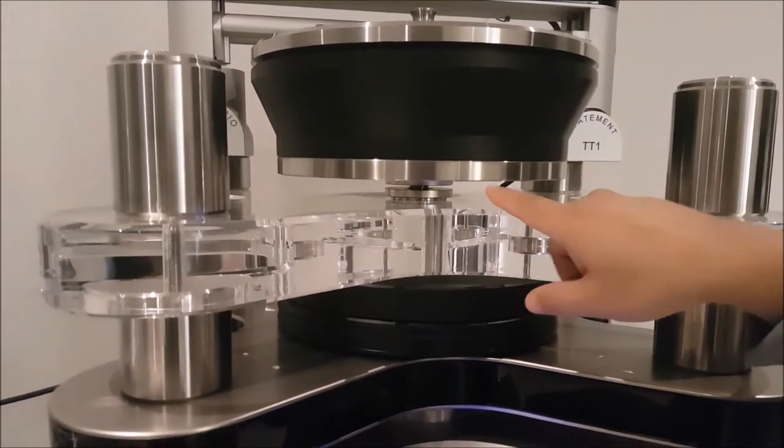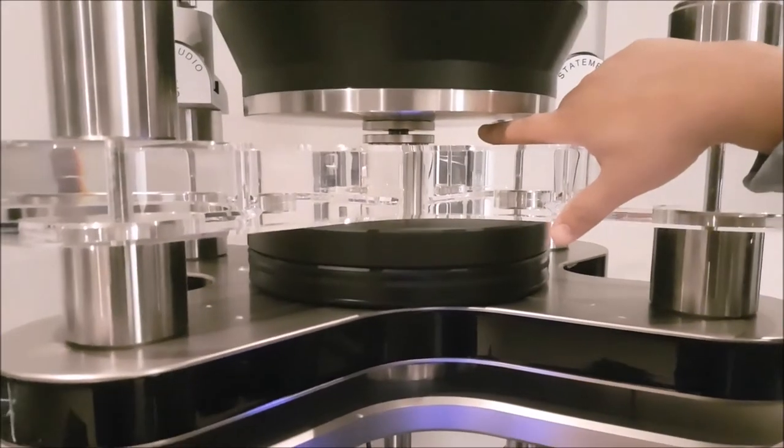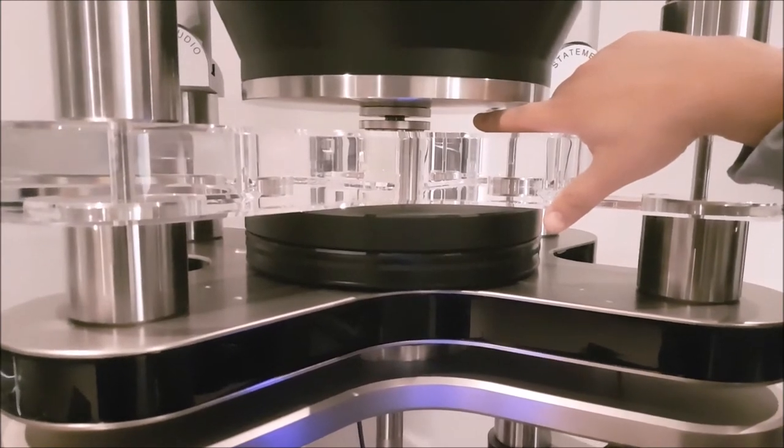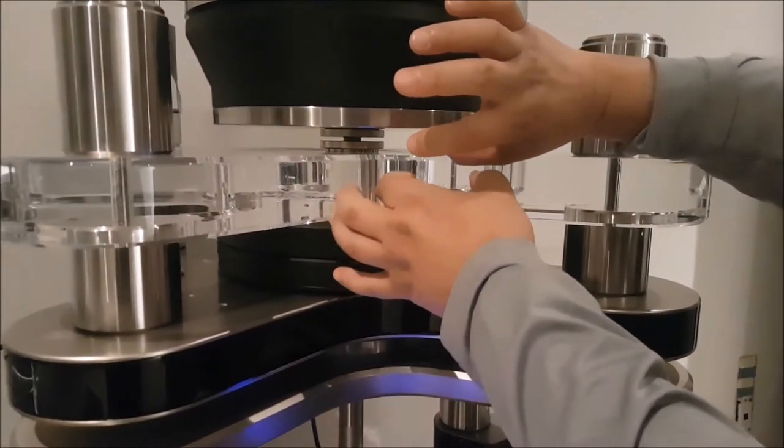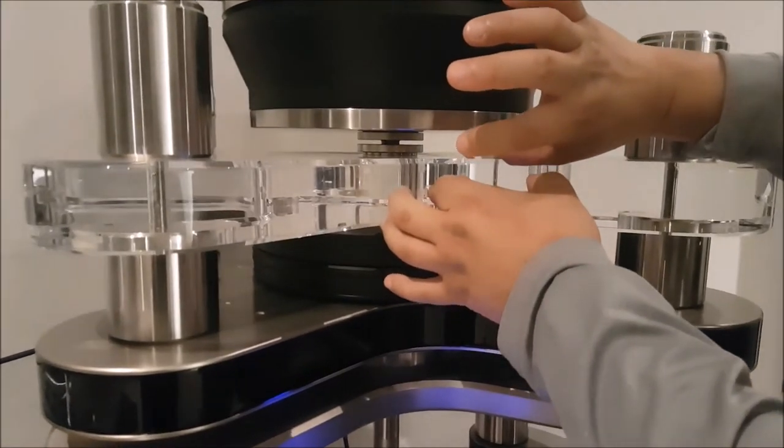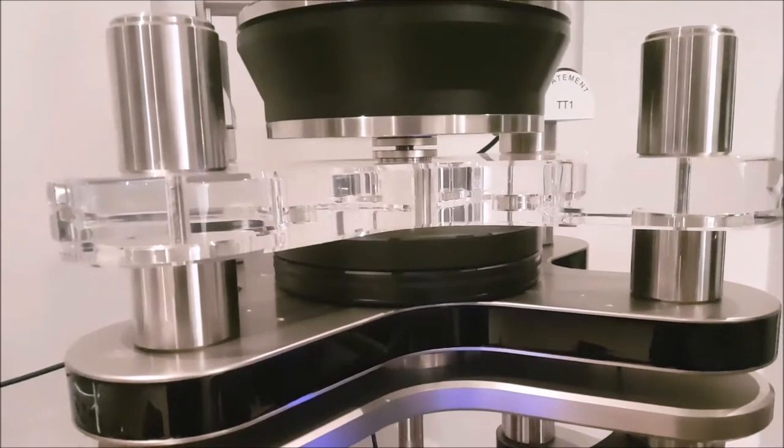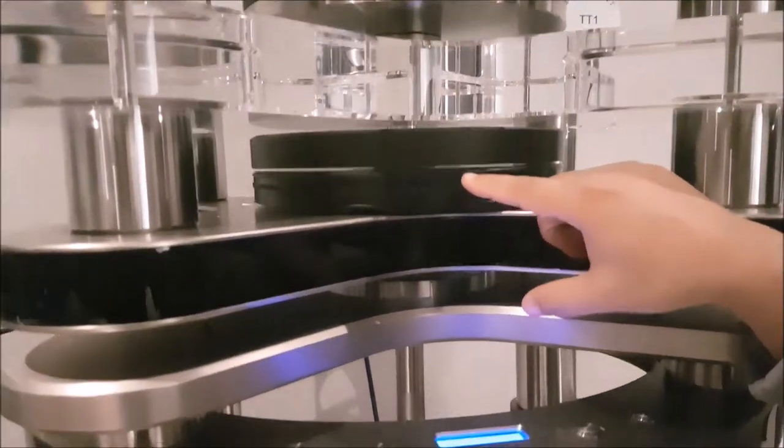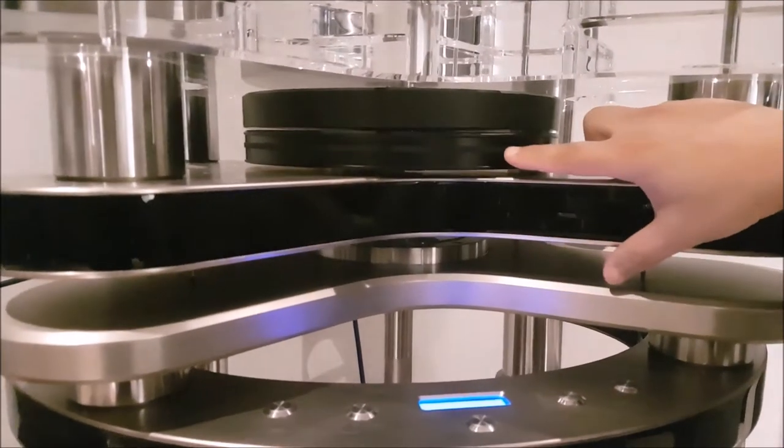And in between here, you see this little gap? That's the magnetic bearing. So there's two ring magnets that oppose each other, and they sit like this, and the magnetism causes it to repel, so it kind of floats on a cushion of air. If you look down here, you can see right through the drive system here. There are magnets embedded in this platter.